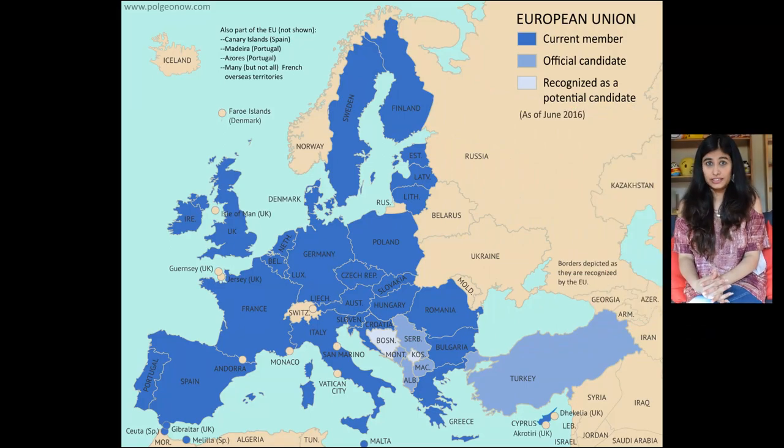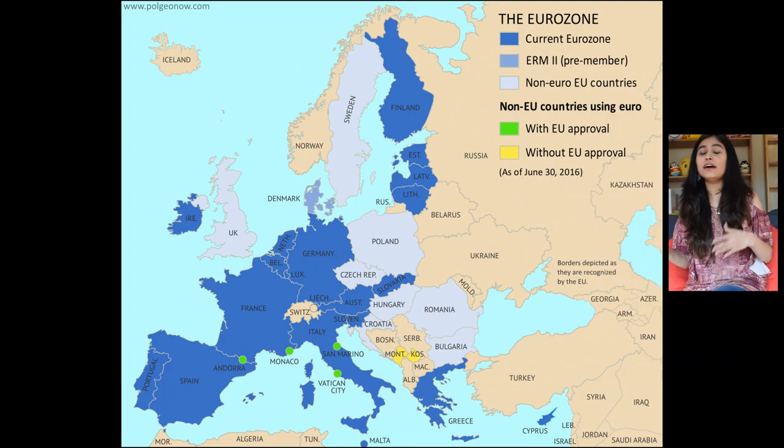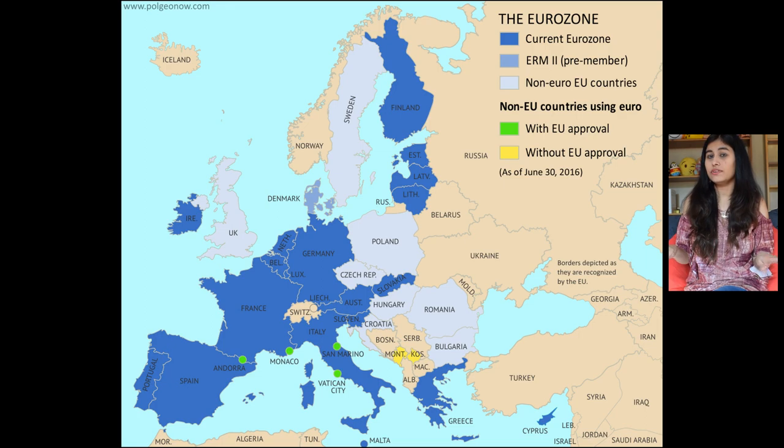Today there are 28 countries in the EU, but soon there will be 27 once Britain finally exits. Even after they exit, the currency of Britain is not going to change because it has always used its own currency — pounds. Britain has never used Euro as their currency because it's not in the Eurozone. There are only 19 out of the 28 EU countries in the Eurozone, and all these 19 countries have Euro as their official currency. It is also good to know that some countries not in the Eurozone have their own currency but also accept Euros.